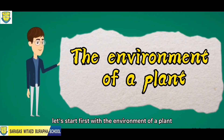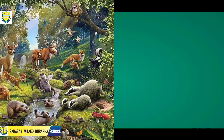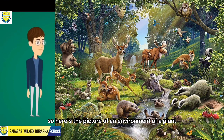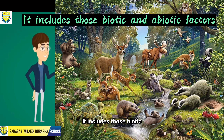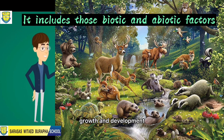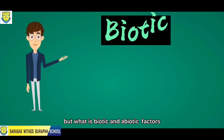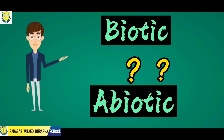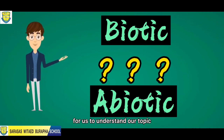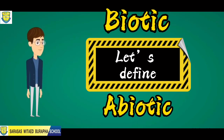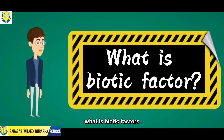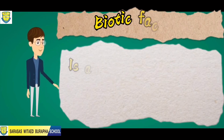Here's the picture of an environment of a plant. As you can see, it includes biotic and abiotic factors that influence the growth and development of forages. For us to understand our topic, let's define what biotic and abiotic factors are. Let's define biotic factors first.